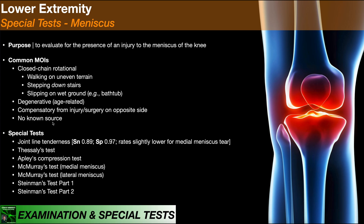Sometimes the patient is not that old — certainly not geriatric — which rules out degenerative or age-related changes. They don't recall any closed chain rotational injuries or mechanism consistent with a meniscus injury, and there are no real gait abnormalities or compensations from past injury or surgery. But the special tests for a meniscus are positive, so you would treat this as a meniscus injury, especially if they have joint line tenderness. Joint line tenderness is very important in the clinical exam — it's part of the objective exam, not so much a special test.